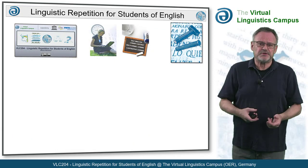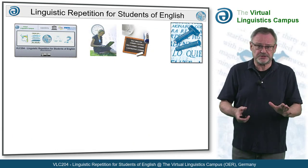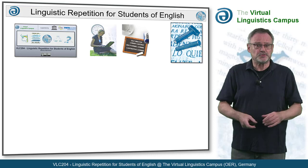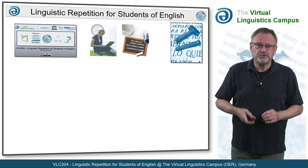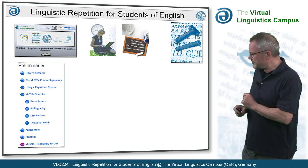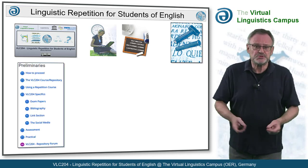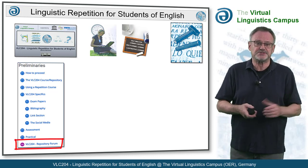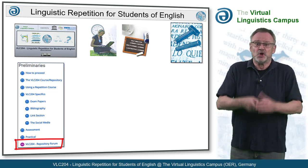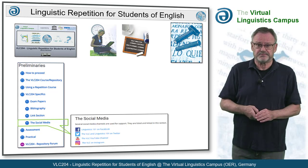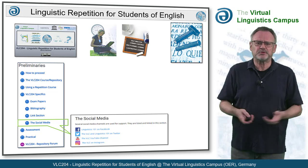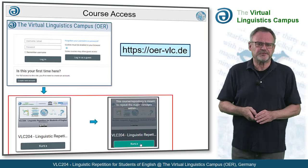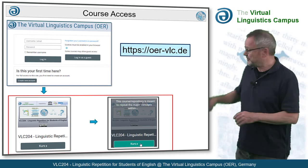The VLC repetition course does not involve any face-to-face tuition. Everything should be self-explanatory. However, it is recommended to go through the course preliminaries first and use the repository forum to discuss questions with your fellow participants, or even use the social media. Course enrolment is simple: you only have to create your free VLC account first and then self-enrol to VLC 204 by clicking on the course tile.